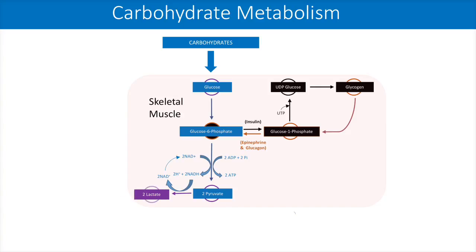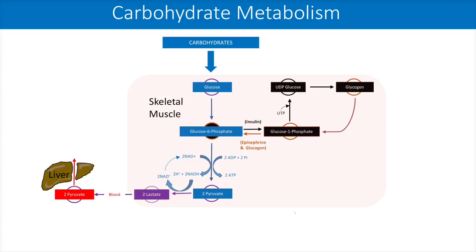Note how the lactate is produced in the absence of oxygen and is often termed anaerobic. Lactate diffuses out of skeletal muscle cells to enter the blood and is subsequently shuttled to the liver, where it is converted back to pyruvate.